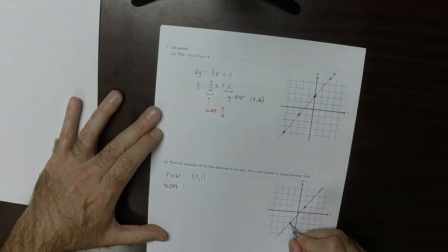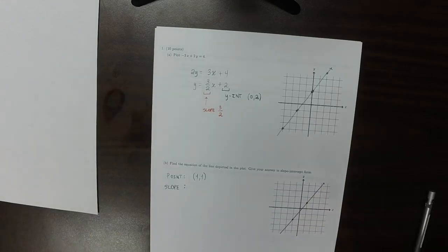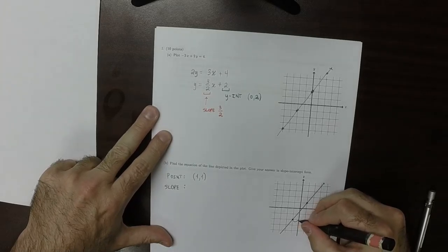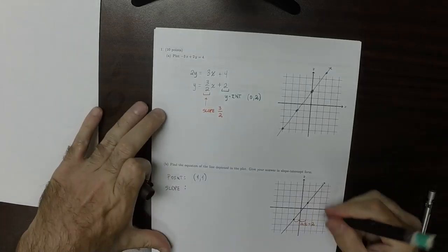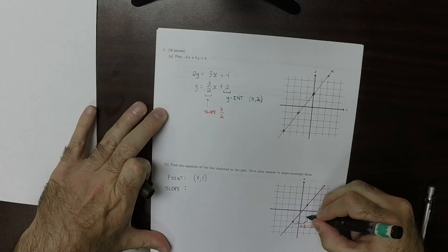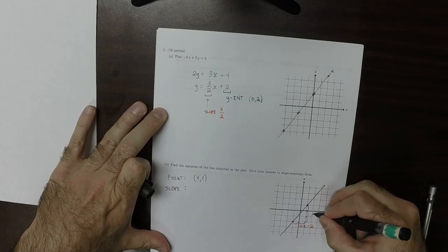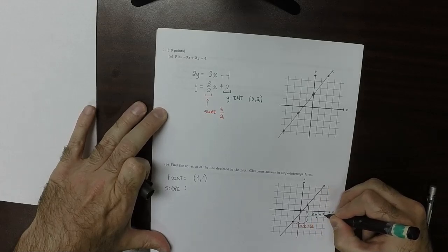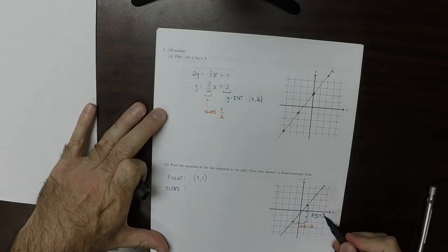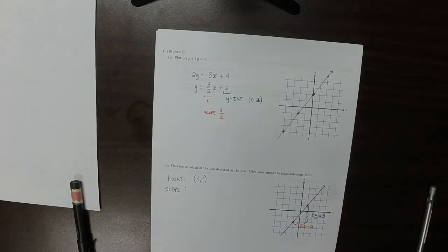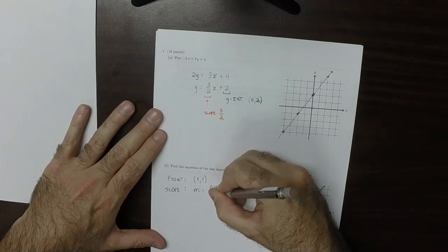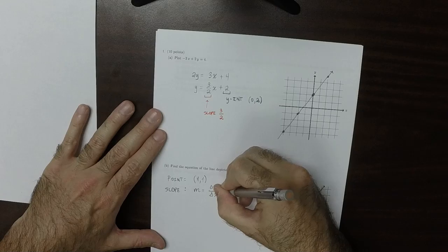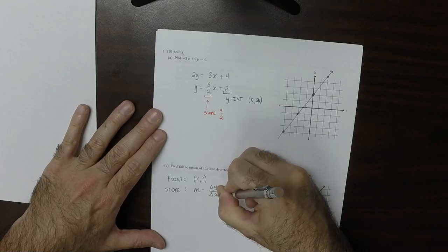And then the slope of this line is, well, delta x is 2, and then delta y is 3. So the slope is 3 over 2. So m is delta y over delta x is 3 over 2.